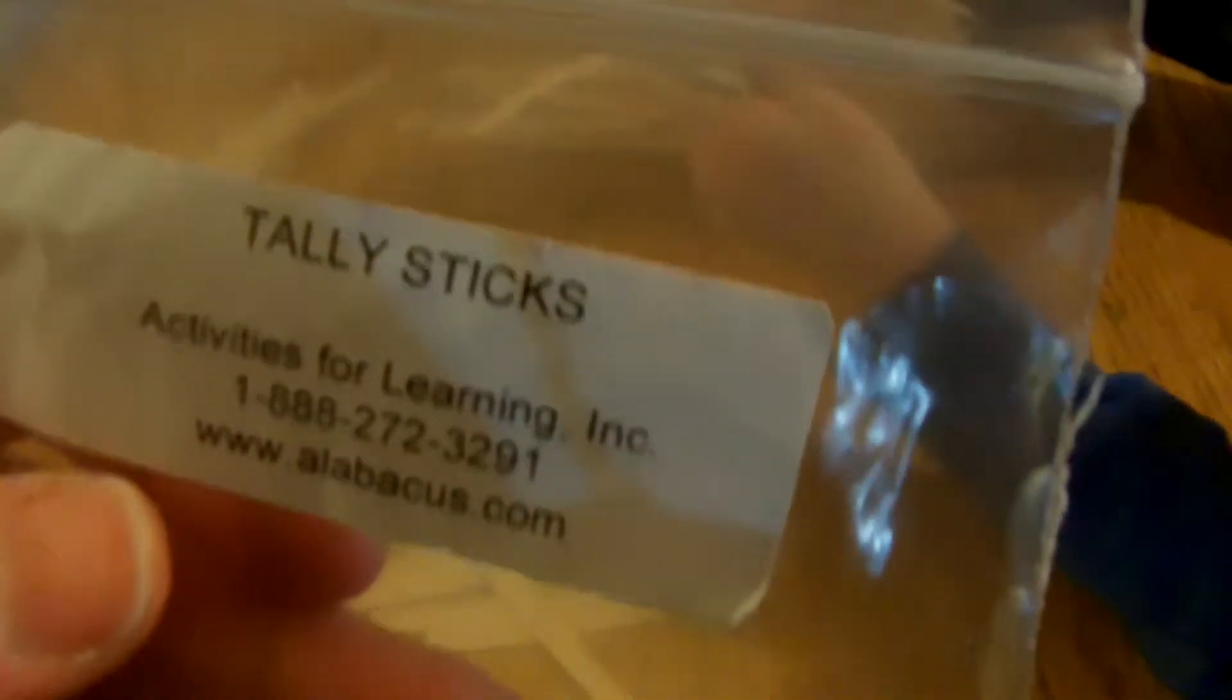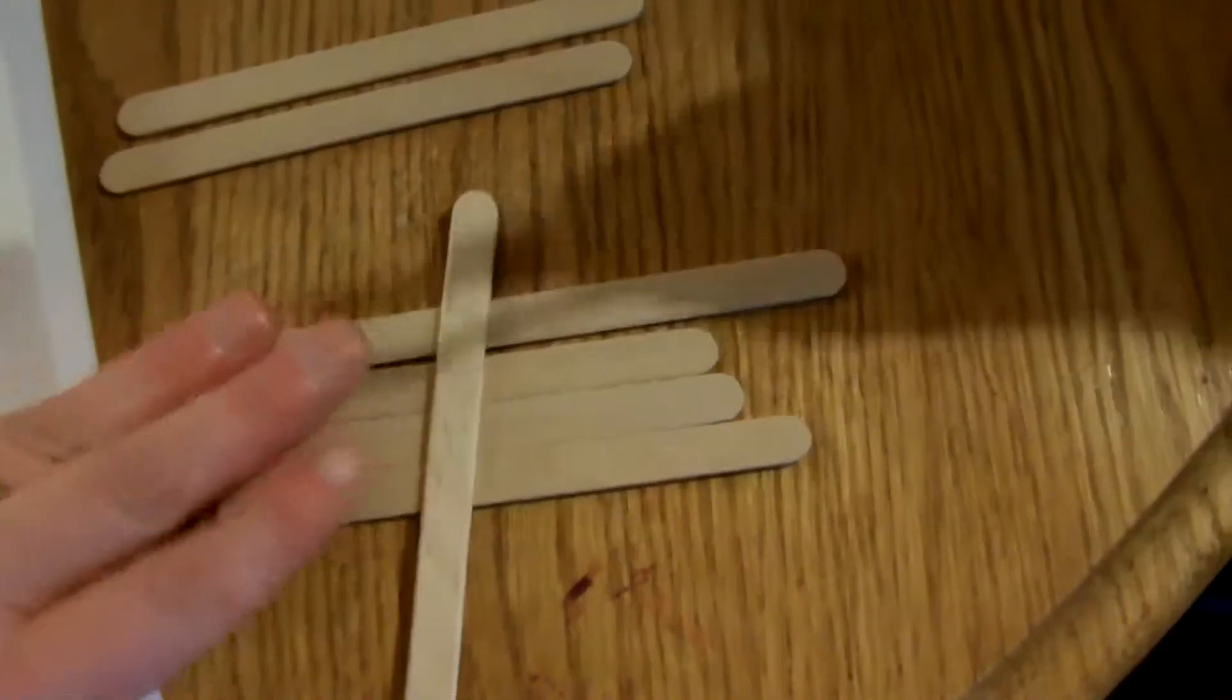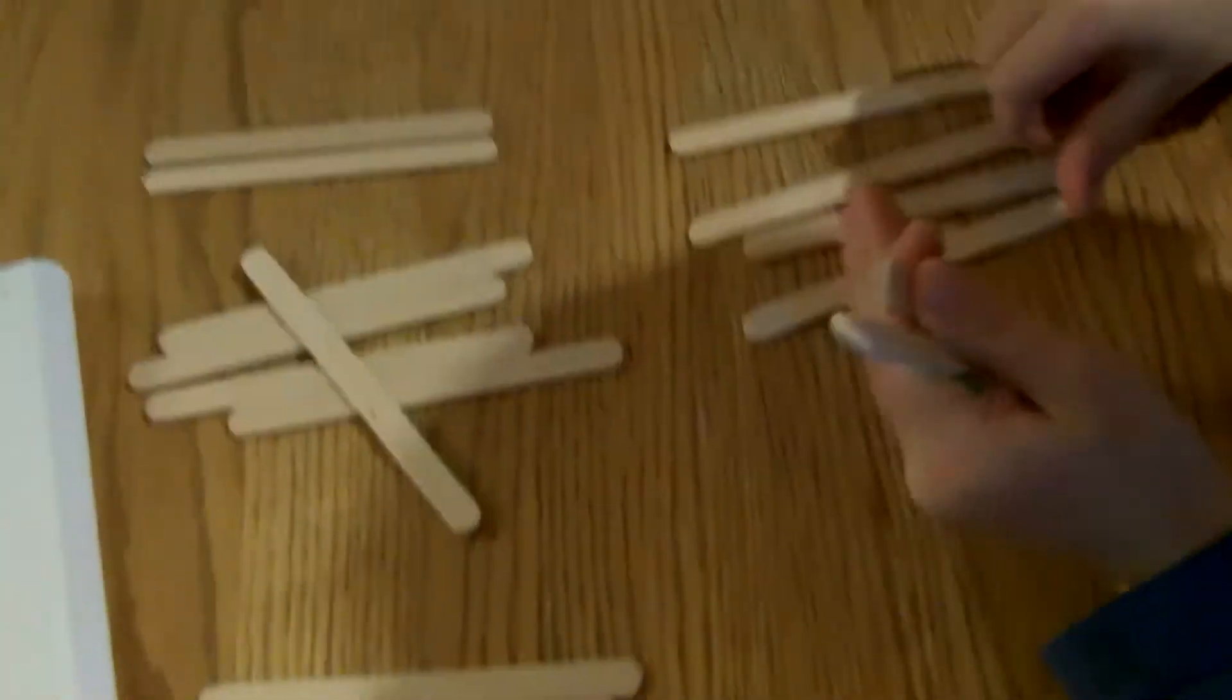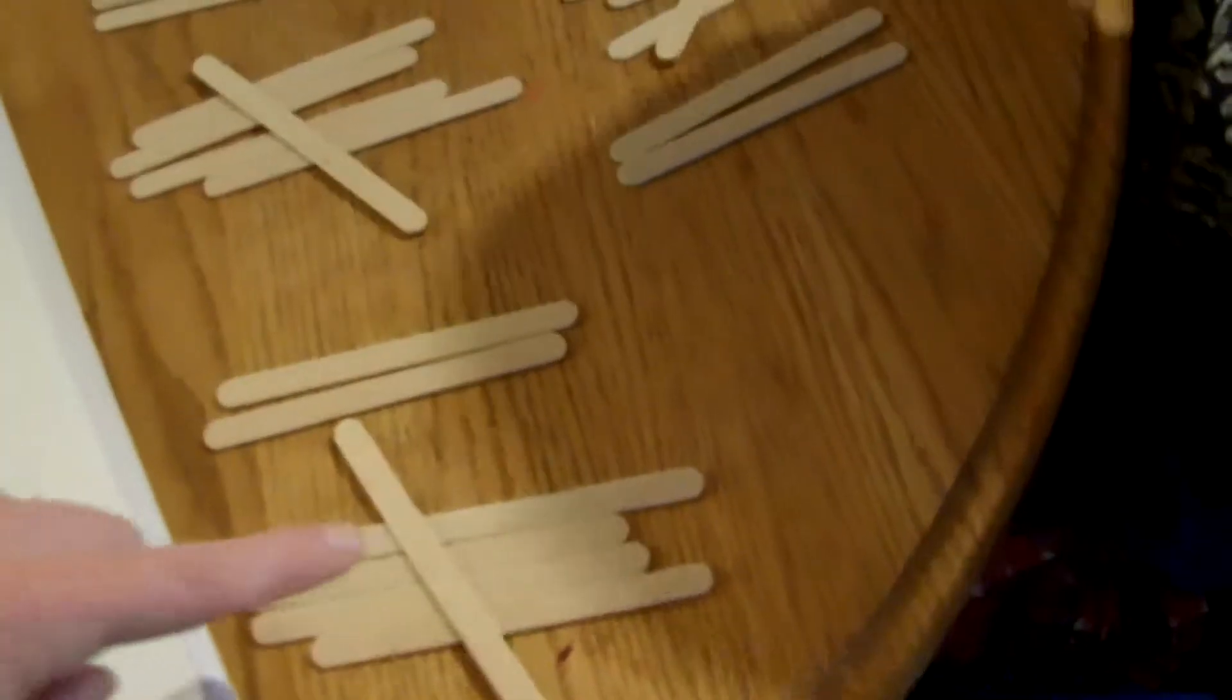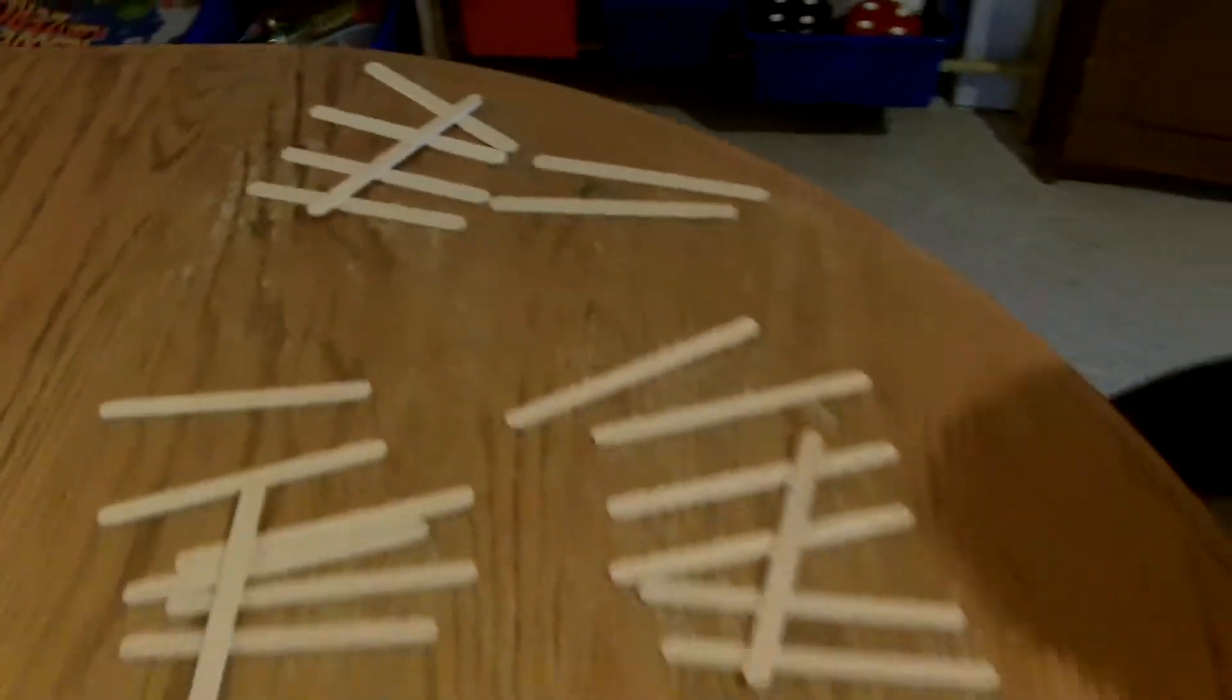So now we're using our tally sticks to make groups of seven. Five, six, seven. Very good job working guys. We have one, two, three, four, five, six, seven groups of seven, so we have 49 tally sticks.